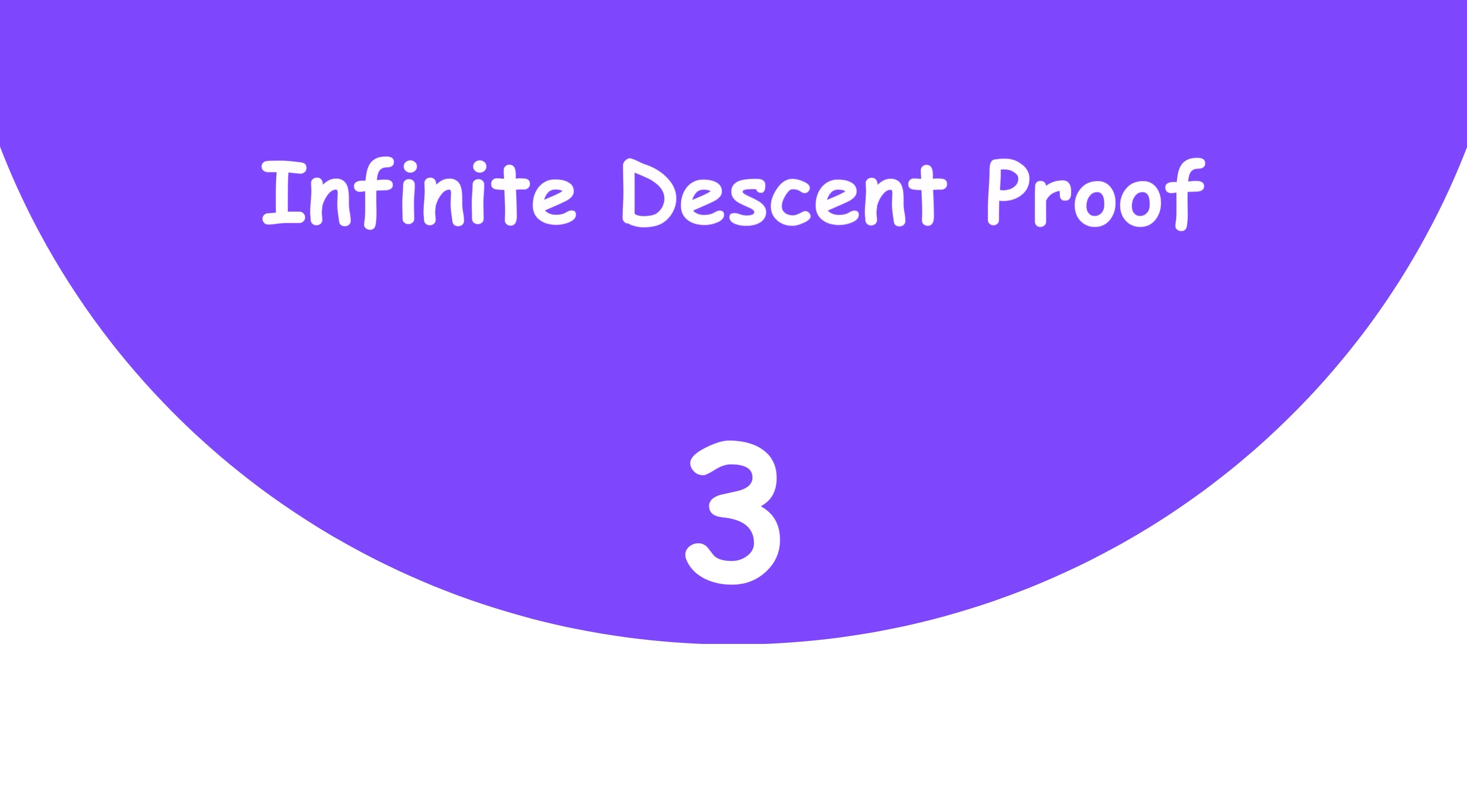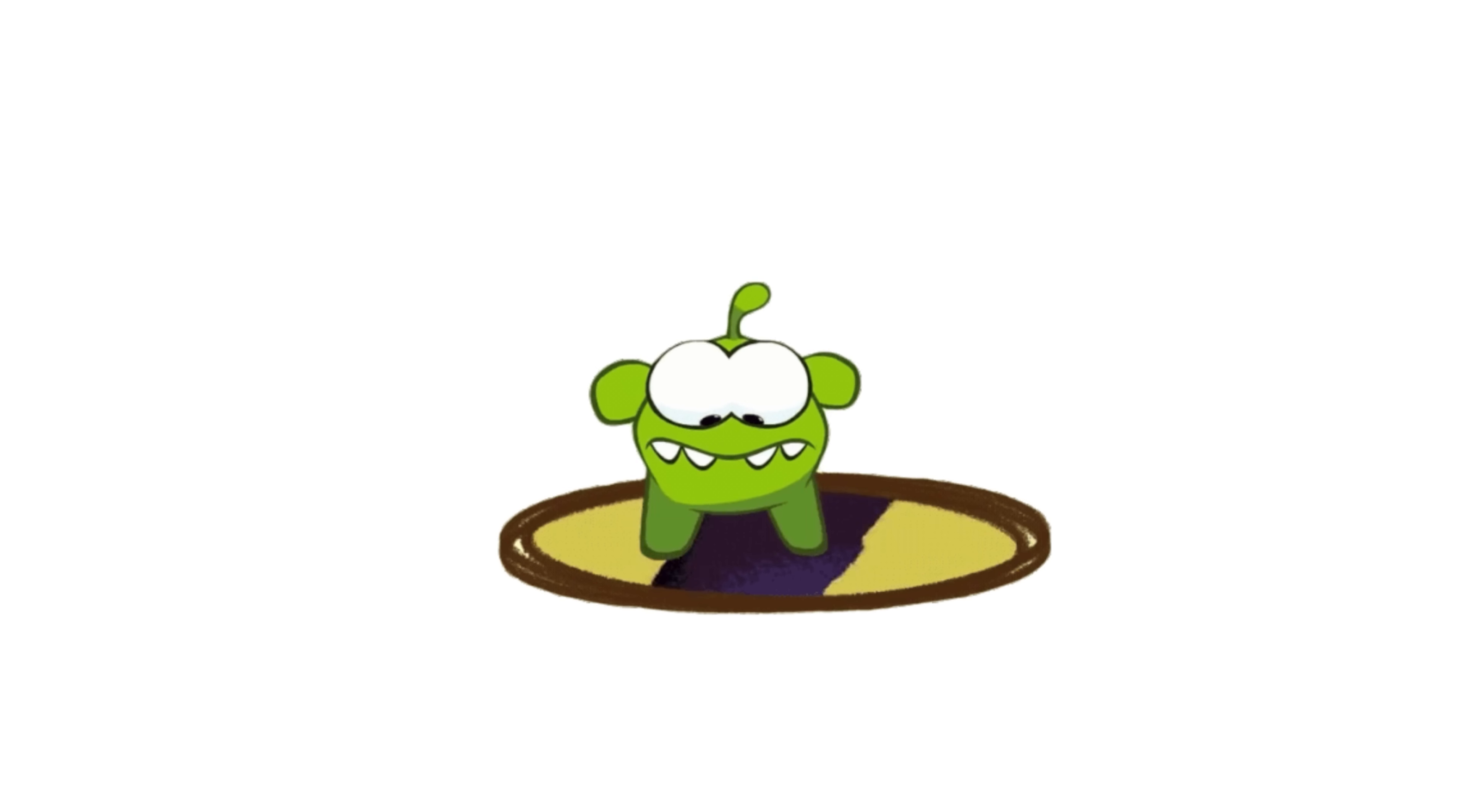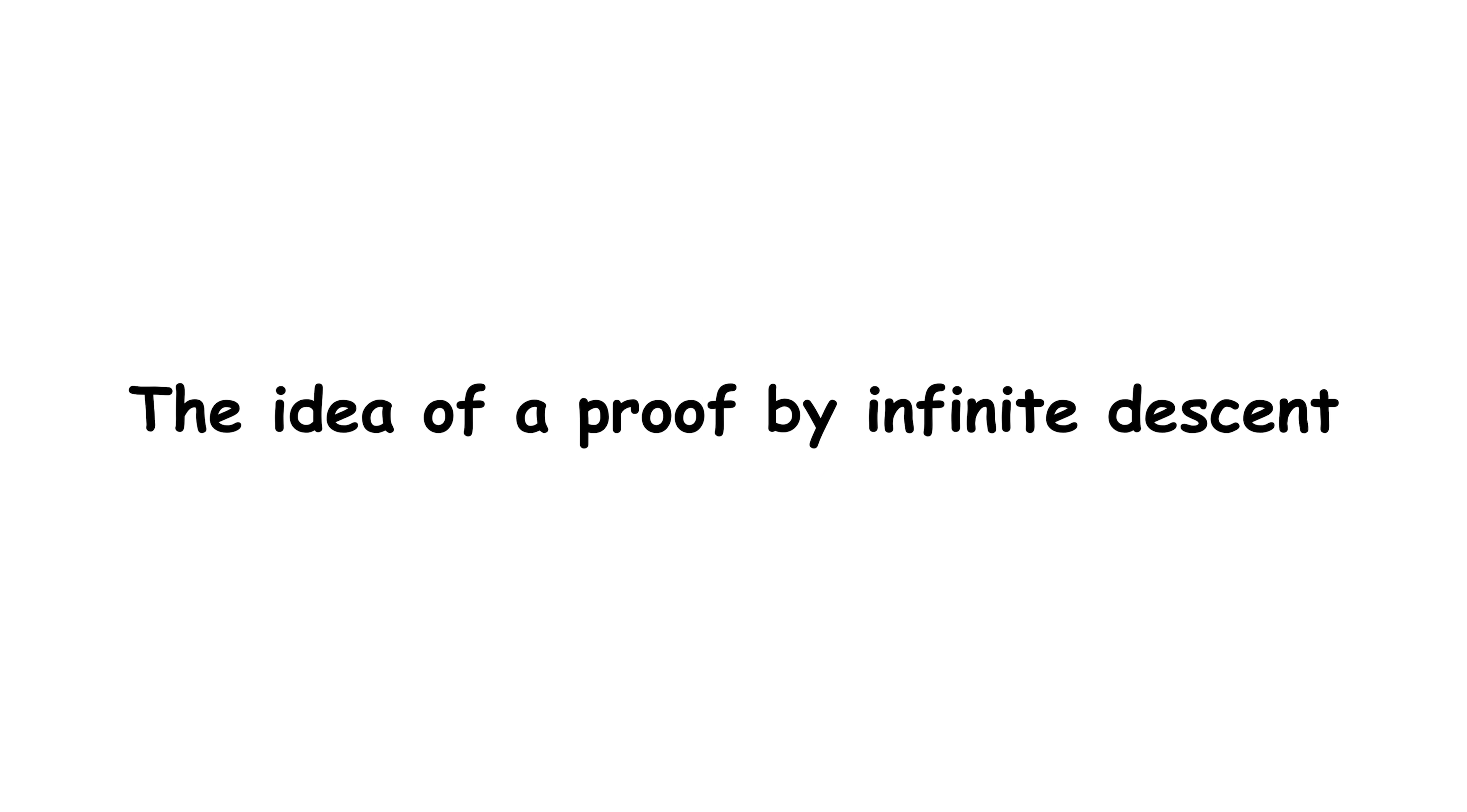3: Infinite Descent Proof. Proof by infinite descent is like the old saying, you can't fall forever into a hole that ends. Actually, that's not a real saying, but it gets the point across. The idea of a proof by infinite descent is to show that if a statement is true for some natural number, then it must also be true for a smaller natural number.